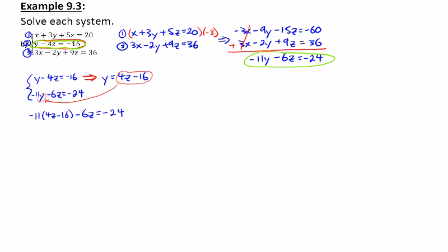So we'll have negative 11 times 4z minus 16 minus 6z, all equal to negative 24. Go through the distribution to get negative 44z plus 176 minus 6z, all equal to negative 24. Combine the like terms, gives us negative 50z plus 176, all equal to negative 24.